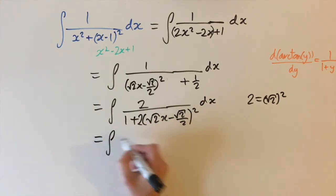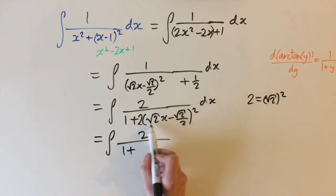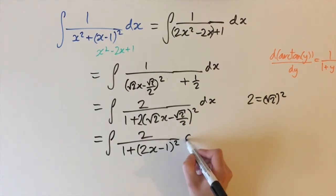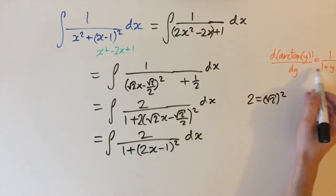If we do that, we get 2 over 1 plus square root of 2 times square root of 2 is 2, so we have 2x for the first term. And the second term, if we multiply this by square root of 2, we have 2 over 2, which is just minus 1. And this is squared. So now we have it in this form.